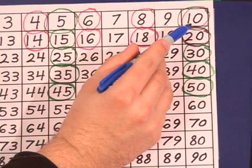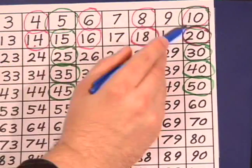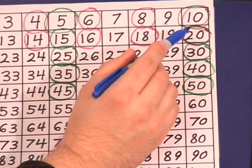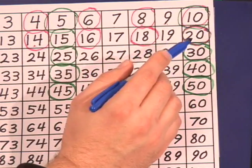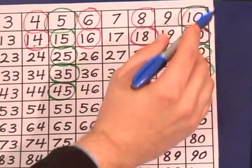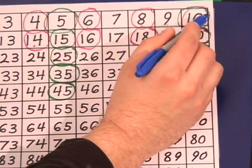We do 10s next because 5s and 10s are very important with our number system and also when it comes to learning about money. So just circle your 10s.